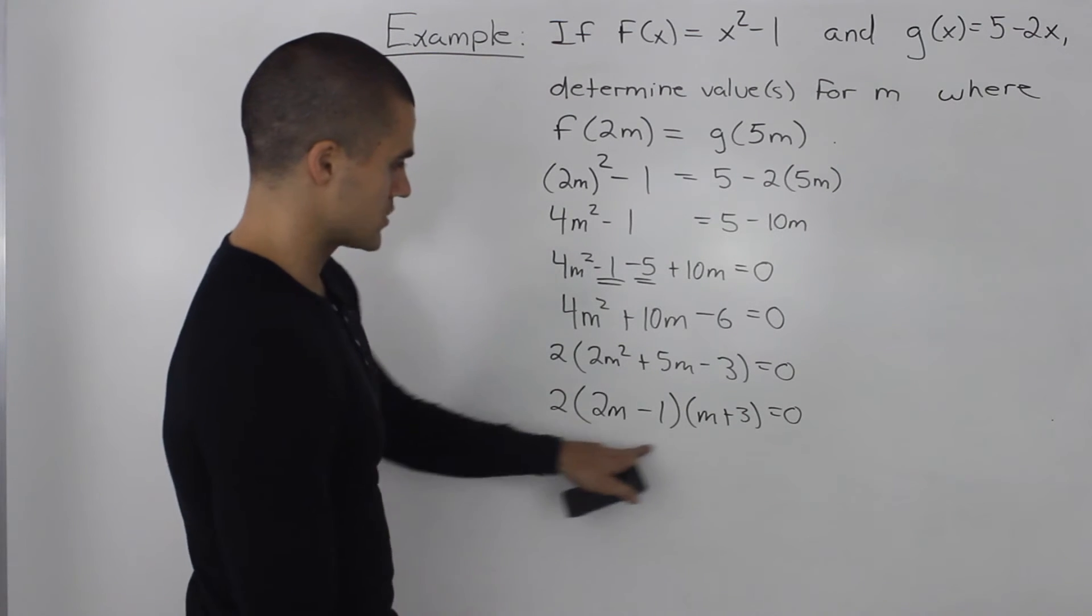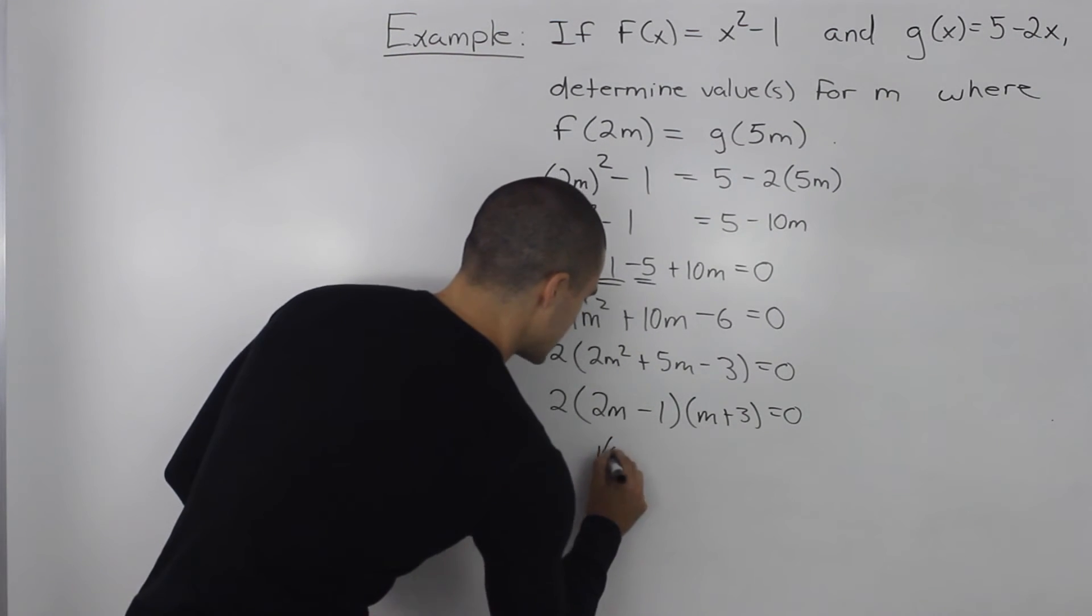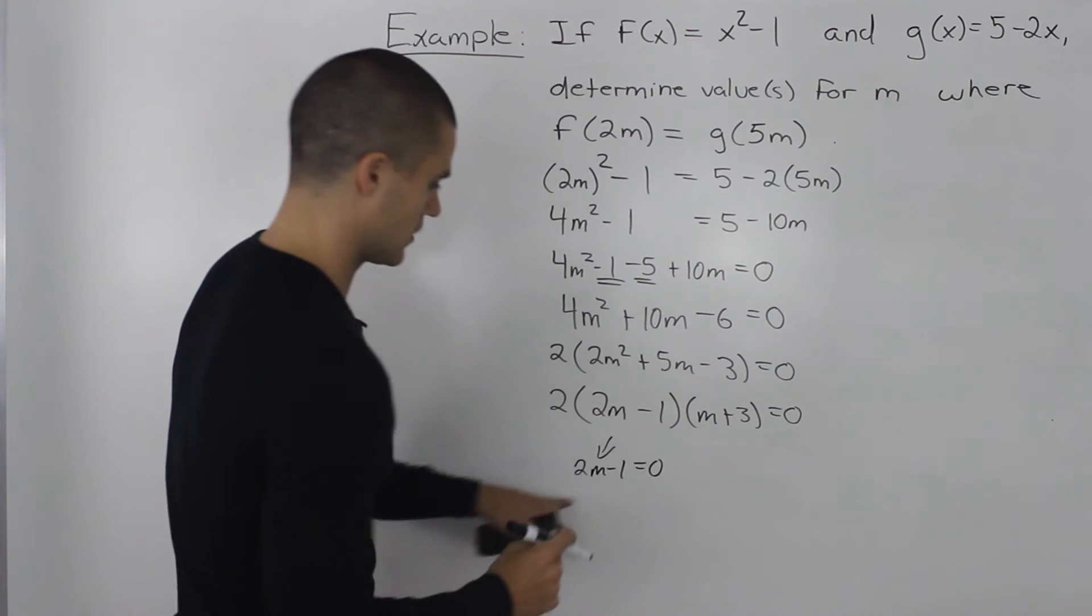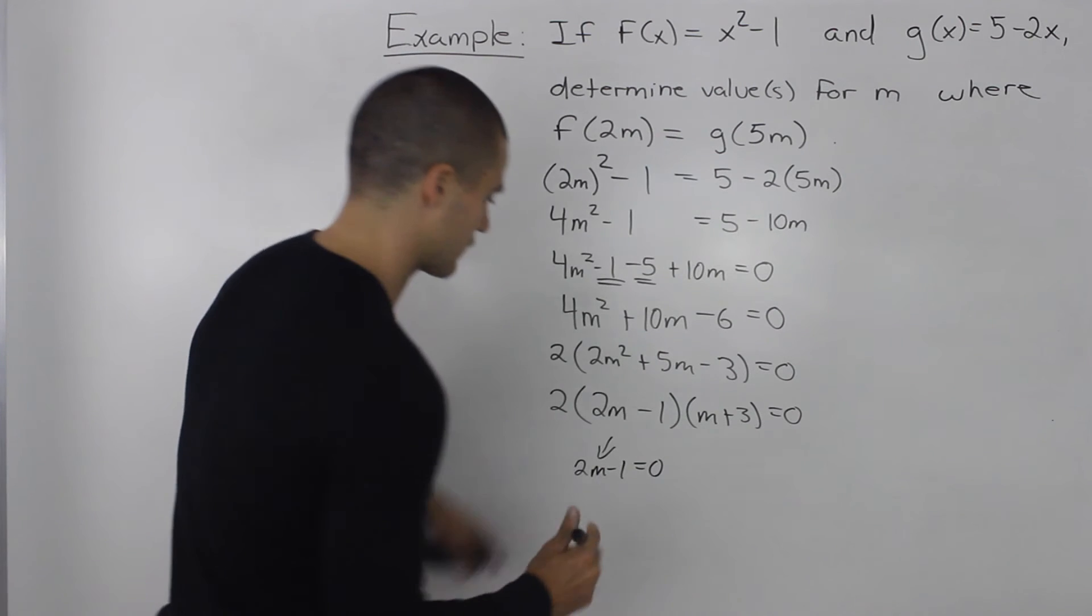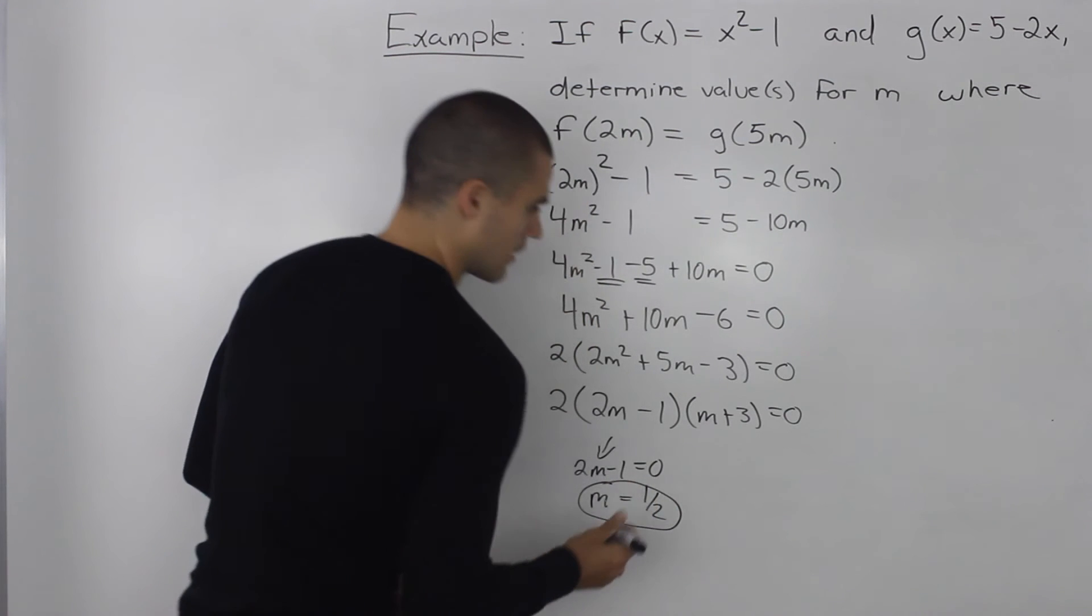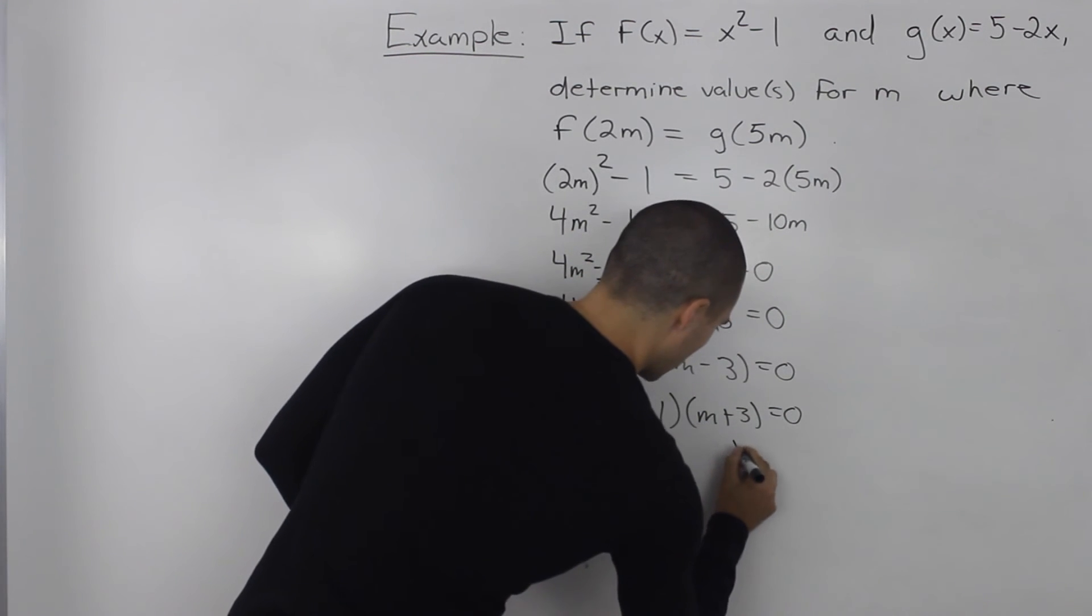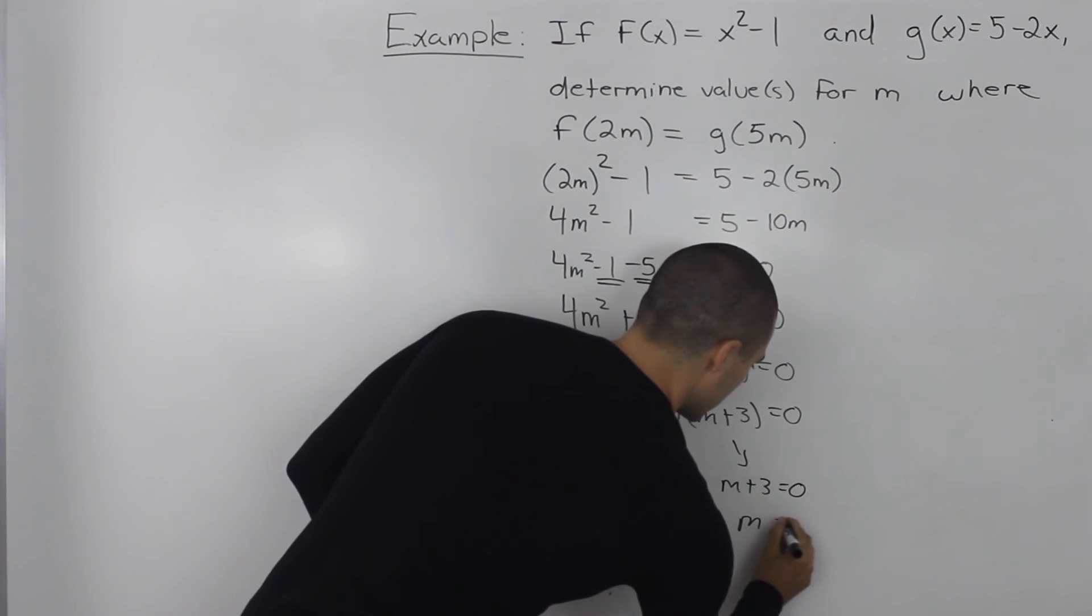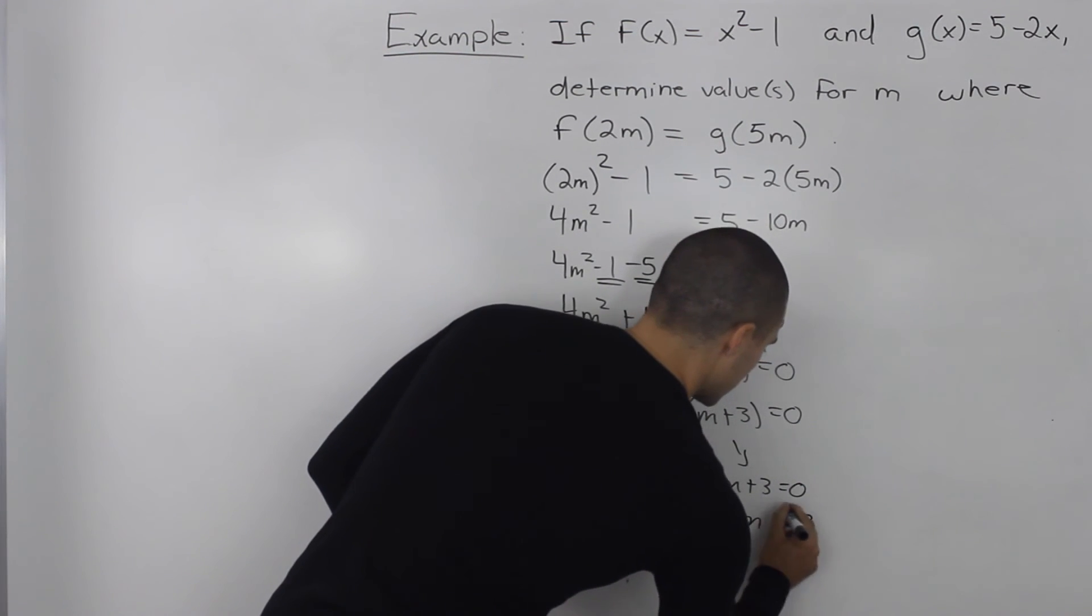So once we're here, basically when does 2m minus 1 equal 0? Well, if we were to isolate for m, we would get an m value of 1 half. And here, when does m plus 3 equal 0? Well, basically when m is equal to negative 3.